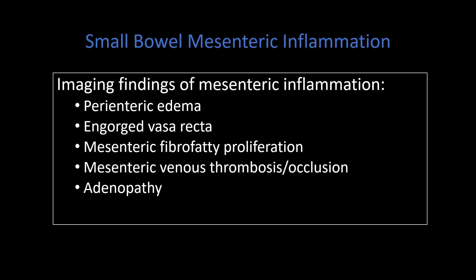When we think about small bowel mesenteric inflammation associated with Crohn's disease, it can manifest in multiple different ways. Mesenteric inflammation can be a great secondary indicator that draws your eye to identify areas of active bowel wall inflammation that you may not have seen as readily otherwise. These five different features of mesenteric inflammation are the most classic findings on MRE or CTE.